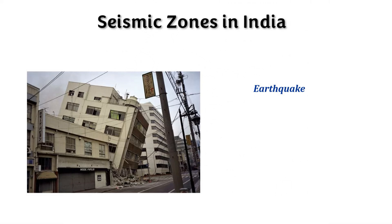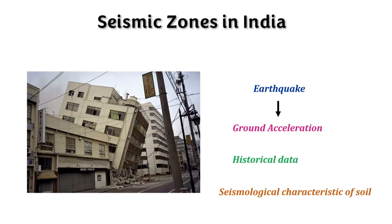First, let us start with what is earthquake force. As we know, earthquake is a natural disaster and it mainly depends on ground acceleration. We cannot predict the actual ground acceleration since seismic activity is a natural disaster. So we have to predict the ground acceleration or the seismic force based on historical data — what earthquakes happened in the past. Seismological characteristics of soil also play a major important role in finding out the seismic intensity.